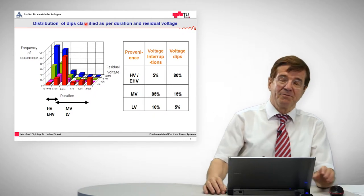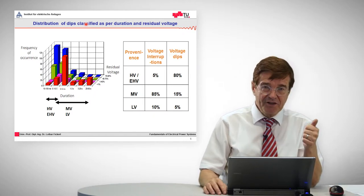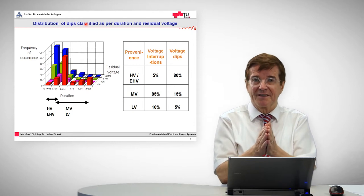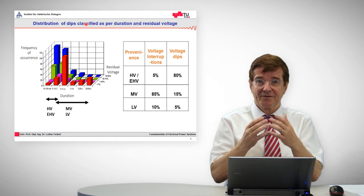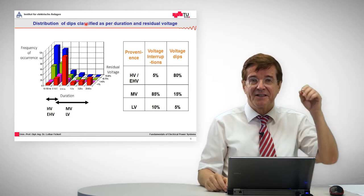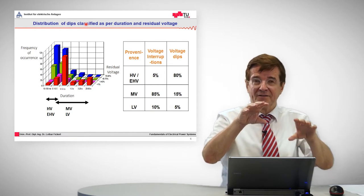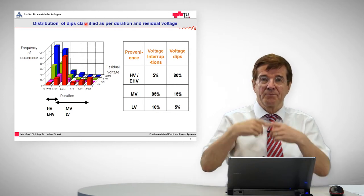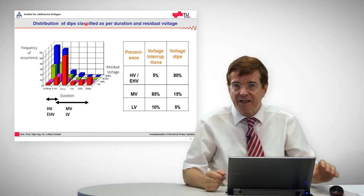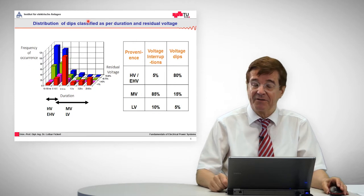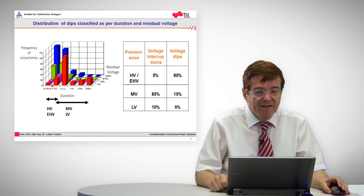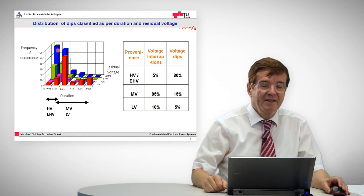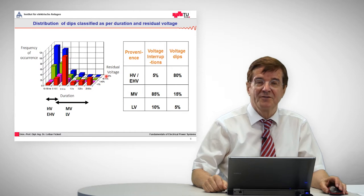One approach is to classify the most important of these events, which are either outages or short interruptions. When you have an interruption in the voltage, electrical processes can no longer take power from the electrical grid. Remember, power in electrical terms is given as the product of voltage and current. So if one of these factors goes to zero — like in an interruption where we have no voltage — then the power delivered is zero and a process will in many cases stop. Therefore, these dips have been investigated, and there is a plot showing the time span of these dips versus the frequency of occurrence and versus the residual voltage.